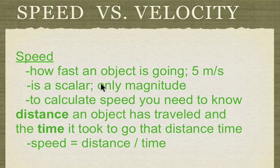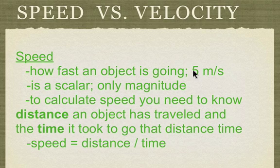Speed is a scalar — all it is is the magnitude. Usually when we say how fast we're going, we just say 5 meters per second or 20 miles per hour. We don't really say which direction we're going. When you get a speeding ticket, the police don't care which way you're going — if you're going too fast, you broke the speed limit. It's not the velocity limit. So speed is a scalar: how fast, distance divided by time.